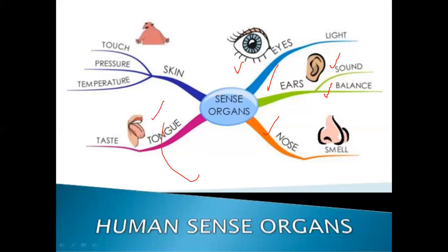Tongue is the sense organ for taste. Skin is the sense organ for touch, temperature — cold, hot, etc. So these are our five sense organs and five senses. We will discuss them one by one in detail.